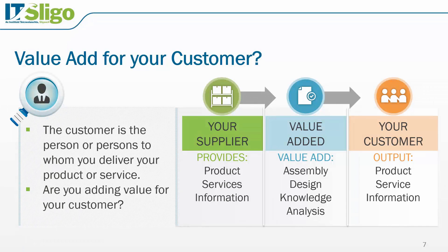Let's take another look at value add. Our customer is whoever we deliver our product or service to. Our supplier gives us product, services, or information, and we have to add either assembly, design, knowledge, or analysis to those, then output product, service, or information. Too often, particularly on the service and information side, we just pass that on without adding any knowledge or analysis. The question is: are you actually adding value and knowledge, or just passing information on? In a lean environment, if you're just passing information on, you should just get out of the way.